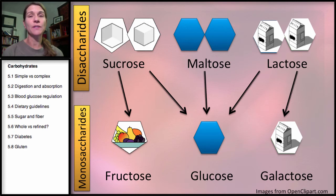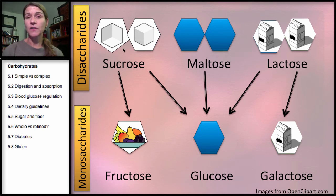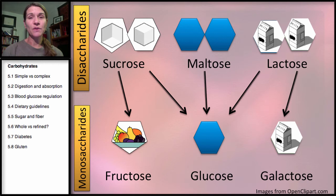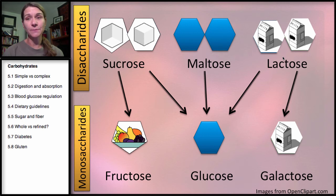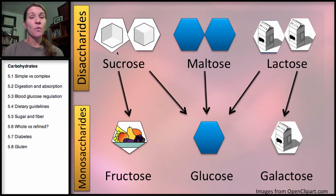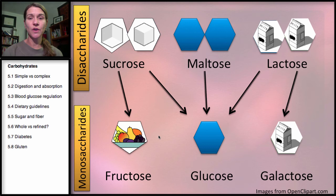Sucrose is one of the most common sugars we'll find. It occurs a little bit in fruit in nature, but one fructose and one glucose is what makes up sucrose. Now, fructose is fruit sugar. Fruits do have some other sugars — a little bit of glucose, a little bit of sucrose — but they're mostly fructose. Think of F for fruit. When you consume table sugar or sugars added to food products, your body is going to break this down into fructose and glucose.